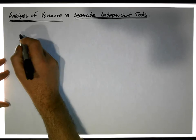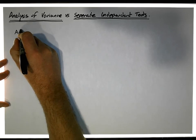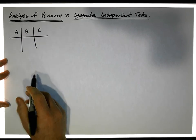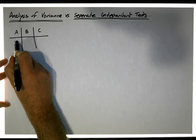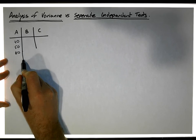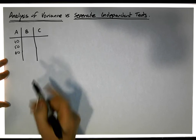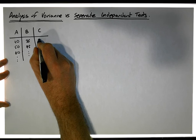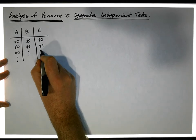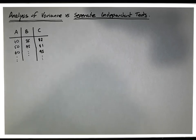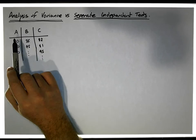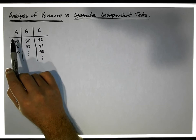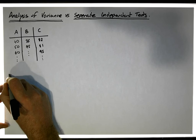In a simple case for analysis of variance, we might have three groups: group A, group B, and group C. We have measurements on those groups — maybe some dependent variable with values like 40, 50, 60 for one group, 25, 75 for another, and 82, 81, 95 for the third. From an ANOVA perspective, we have a number of groups, typically more than two, and the question is whether there are differences in the averages.